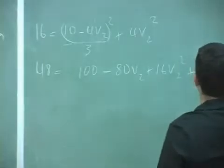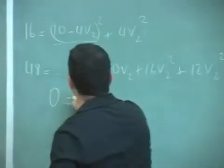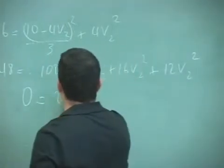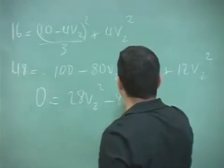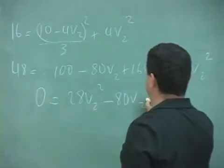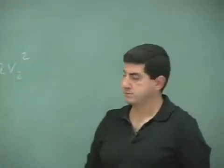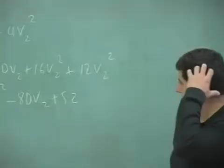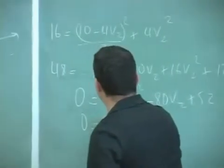Plus 12v2 squared. Then add these two, you get 0 equals 28v2 squared minus 80v2 plus 52. You could simplify it by dividing by 4.